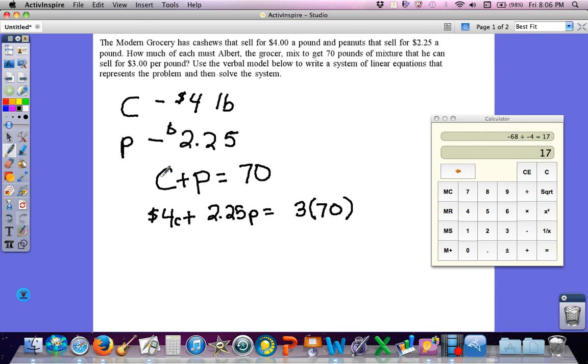But I know that when I get done, I'm going to have 70 pounds that sell for $3. So this is going to end up being equal, 3 times 70, to 210.